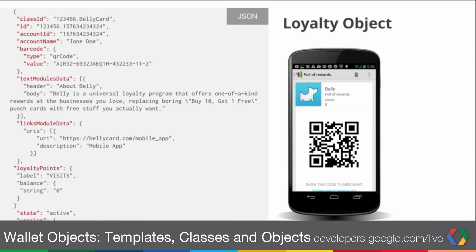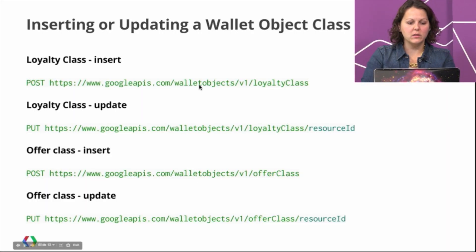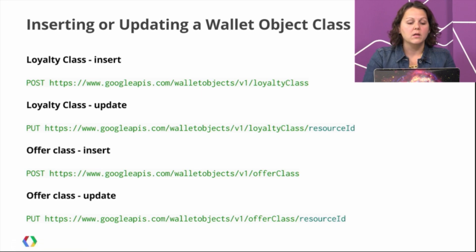Now that we've discussed how data is formatted and how it's rendered, Maru will tell you how to insert and manipulate this data. So now let's look at ways that we can insert classes and objects into our Google Wallet app. The first thing we can look at is our RESTful APIs. We provide RESTful APIs to insert, update, add messages, and get your objects and classes.